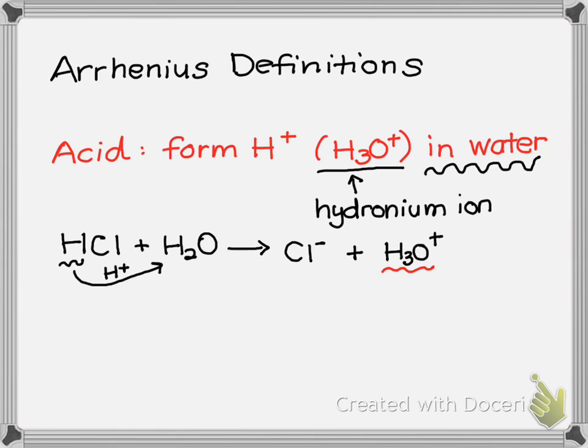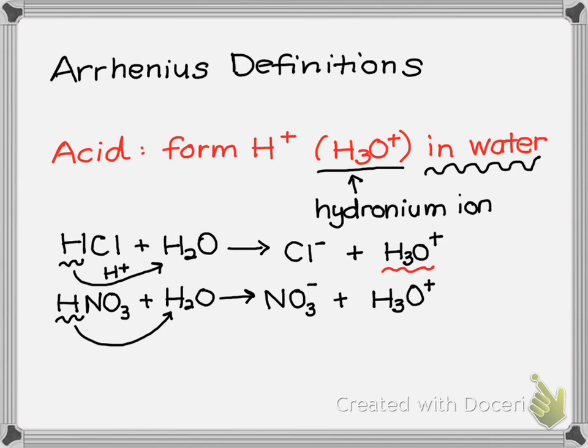Let's look at another example. Nitric acid is another example - nitric acid is HNO3. If I put it in water, the hydrogen comes off and the NO3 remains, and I have to put a negative because the H+ is coming off, so it leaves the negative behind. Then the H goes on to the water and makes the hydronium ion.